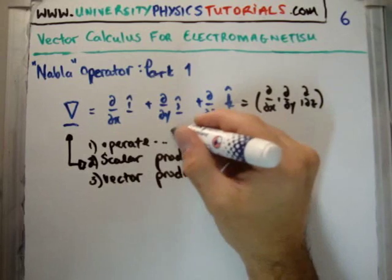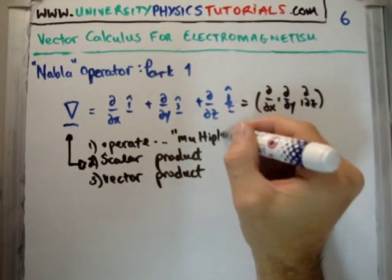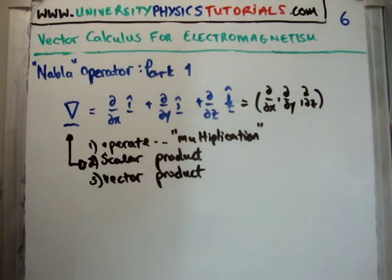So this, I suppose, if you want to think, you can think about this as multiplying, or multiplication. Now, it's not. But if you want to draw the analogy between normal vector operations, you have the scalar product, the vector product, and then multiplication by some other vector or scalar. So let's see what they look like.